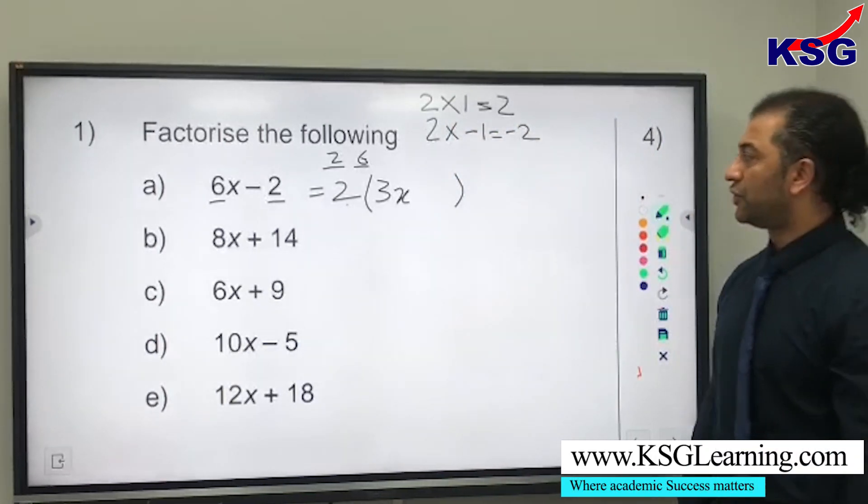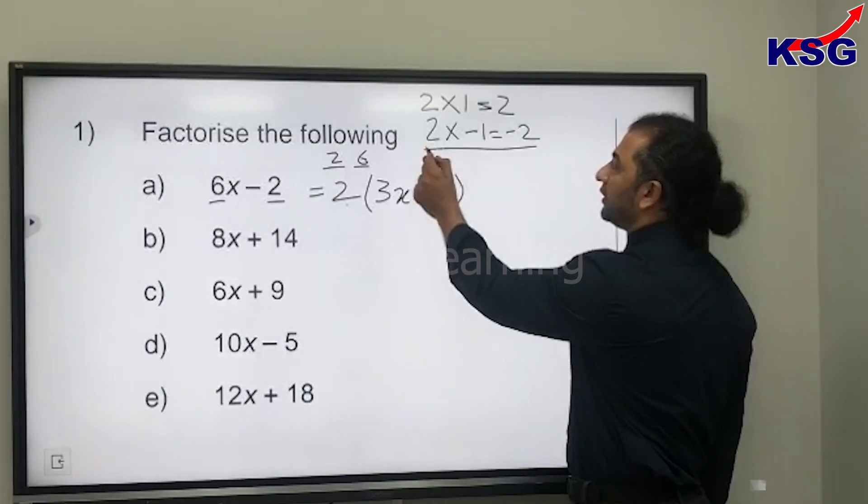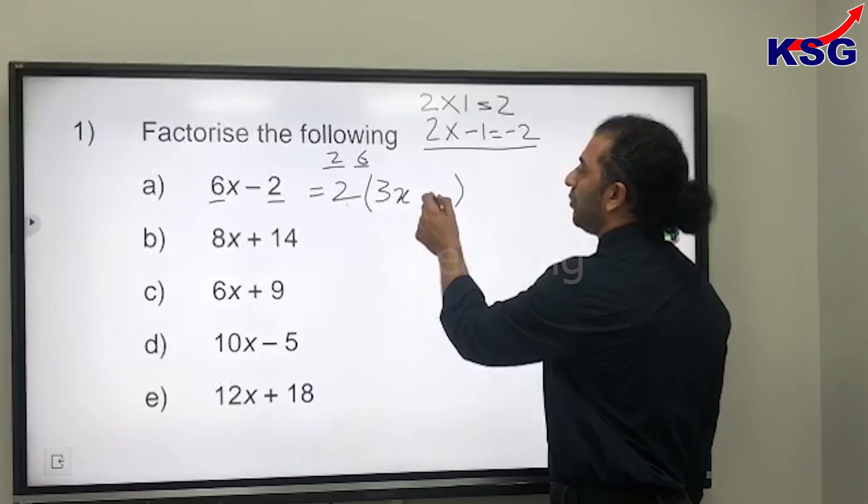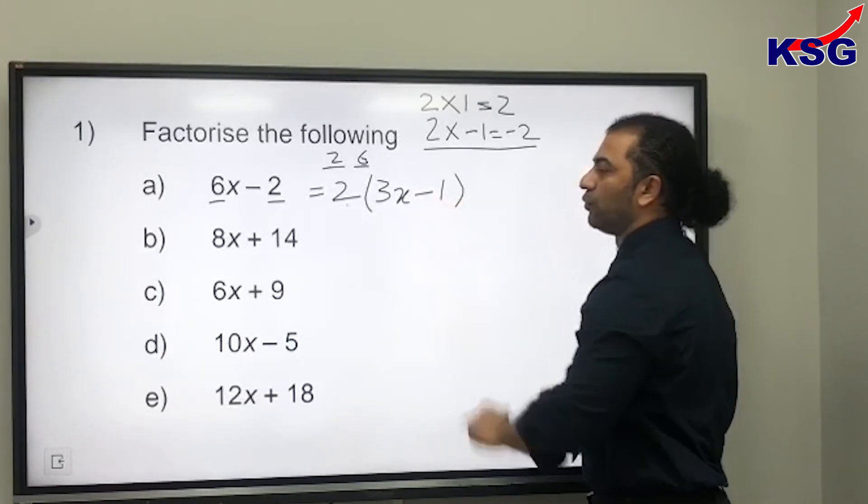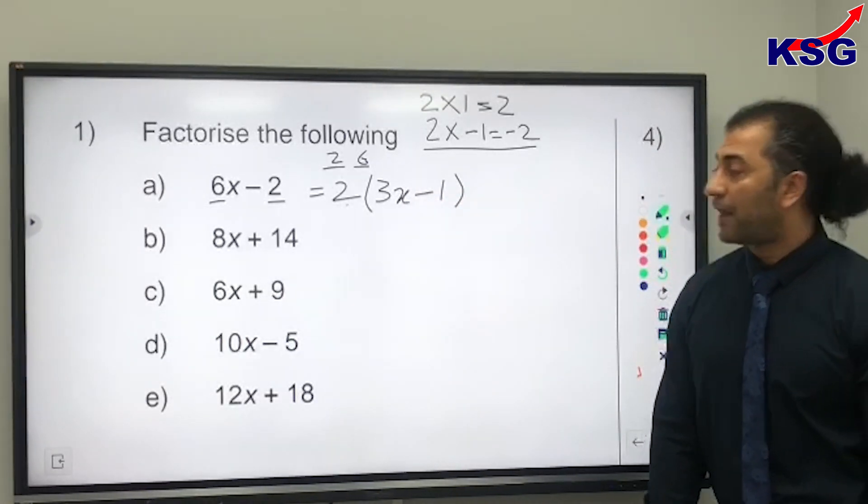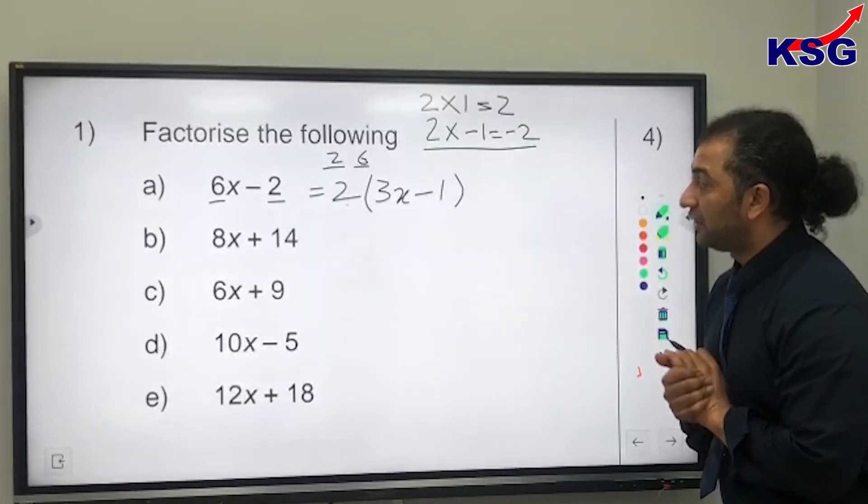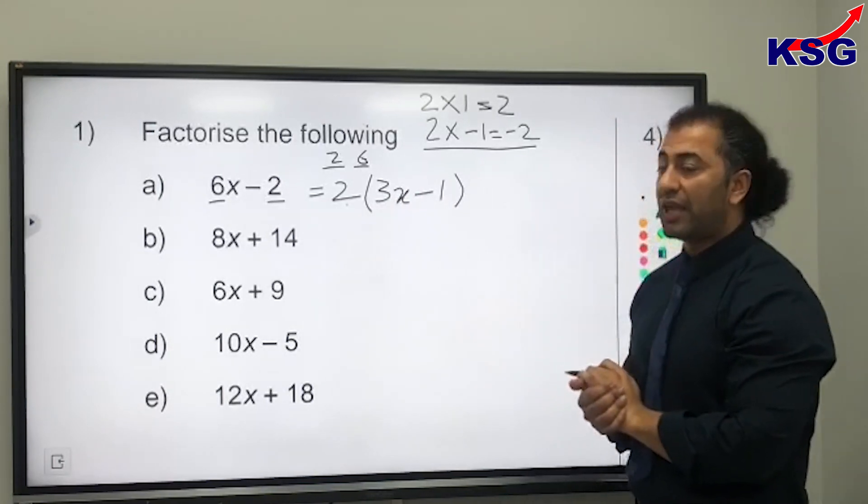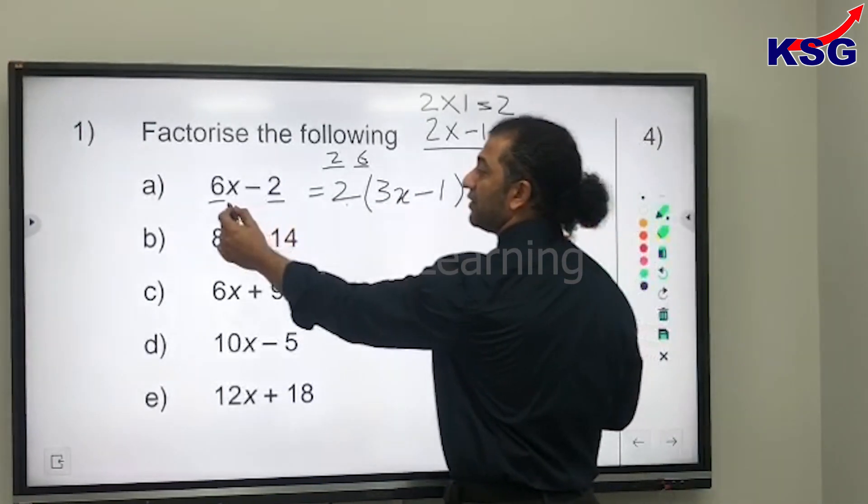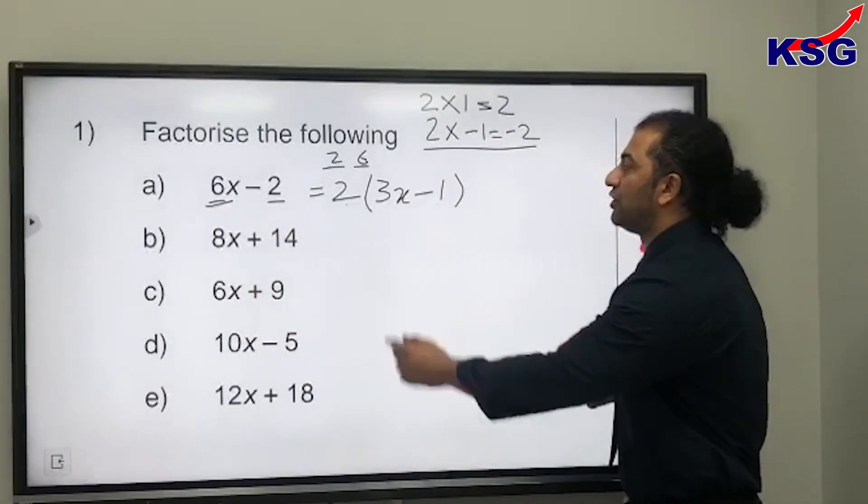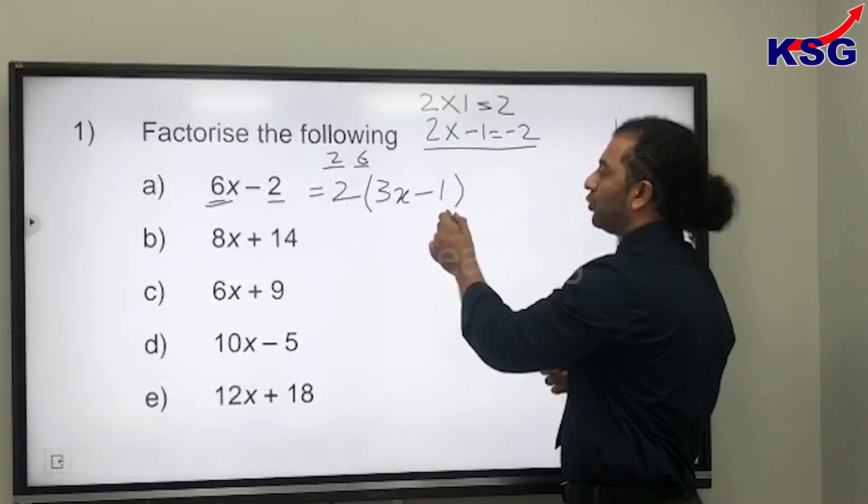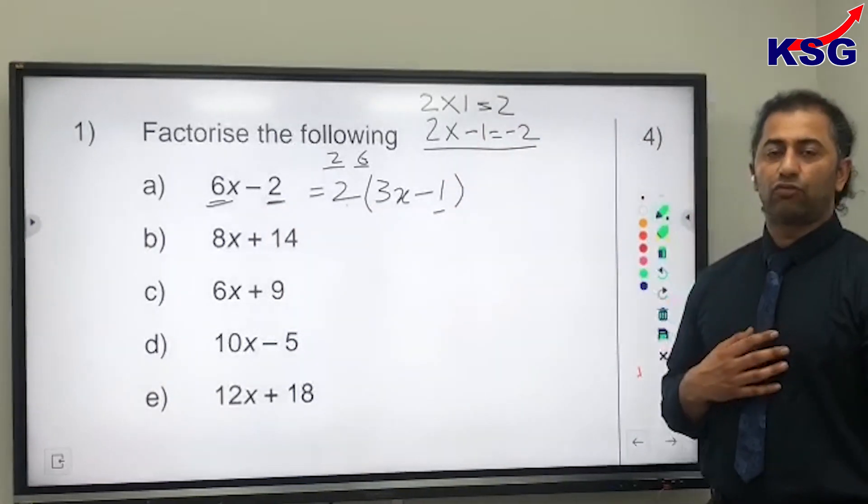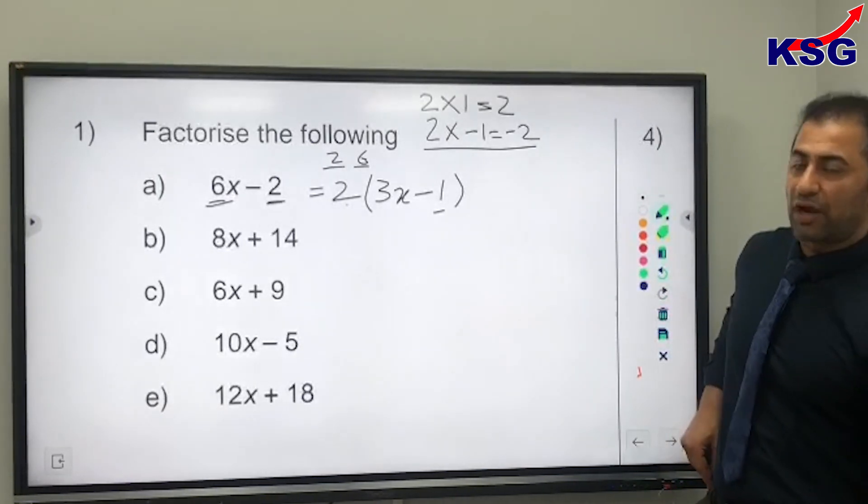So that minus 1 will come up here. We can always check our answer to confirm that it's correct. If we times 2 by 3x, that gives us 6x—yes, that's correct. If we times 2 by minus 1, that will give us minus 2, so our factorization is correct.